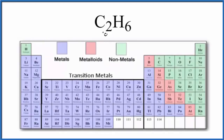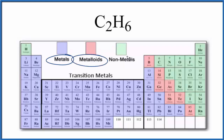The question is whether C2H6 is ionic or covalent. Covalent is also called molecular. So let's look at the periodic table divided up by metals, metalloids, and nonmetals.